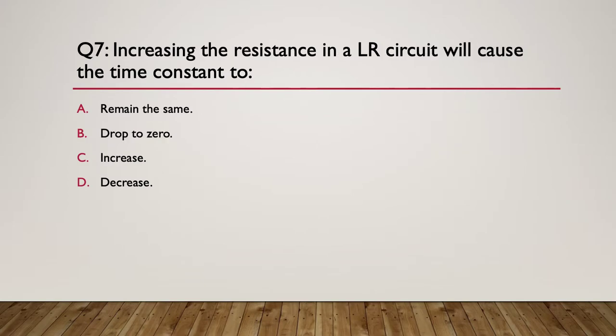Seven: Increasing the resistance - okay, so it's the resistance we're increasing - the circuit will cause the time constant to do what? So again, write out your time constant formula. You can make up some values and substitute in and see what effect it has. So will it remain the same, drop to zero, increase, or decrease?